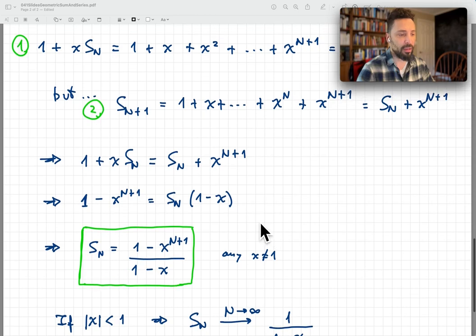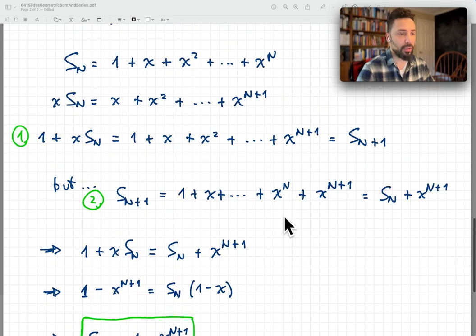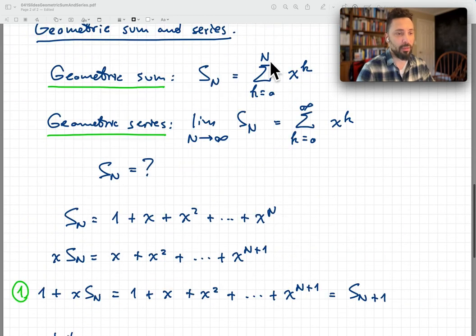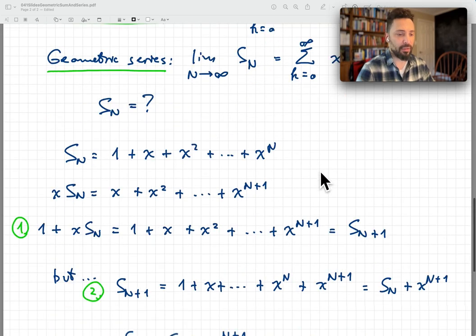Okay, so if x is 1, what do you do? Well, if x is 1, it's very easy. What is S_n if x is 1? Well, it's just n plus 1, right? So if x is 1, then we're adding n plus 1 terms, and so that's the result we know.